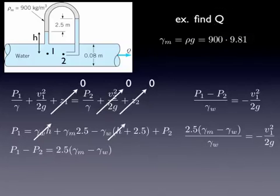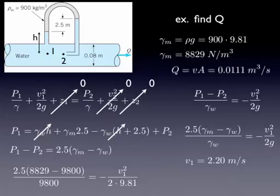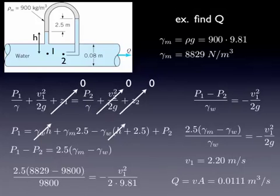We weren't given gamma for the measuring fluid. We were given rho. So I'm going to calculate that. Gamma is rho g. This is one of those relationships you should have memorized. That gives us a gamma for the measuring fluid. Then we can look up a gamma for water, plug all those numbers in, and solve for velocity of 2.2 meters per second. Now, the question asked for flow rate. Flow rate is velocity times cross-sectional area. I'm going to skip the math there and just give you the answer. The flow rate is 0.0111 meters cubed per second.